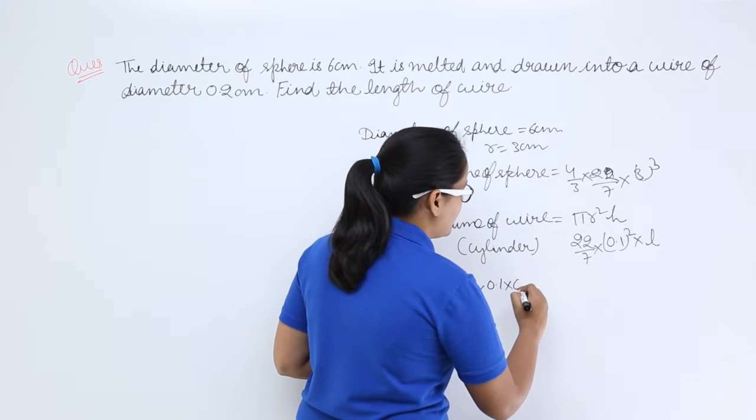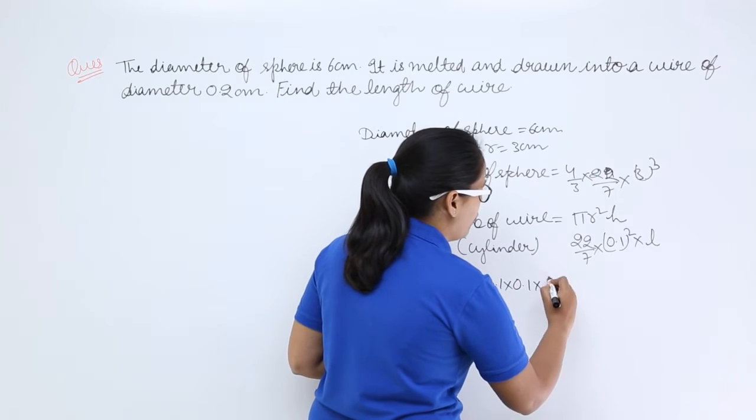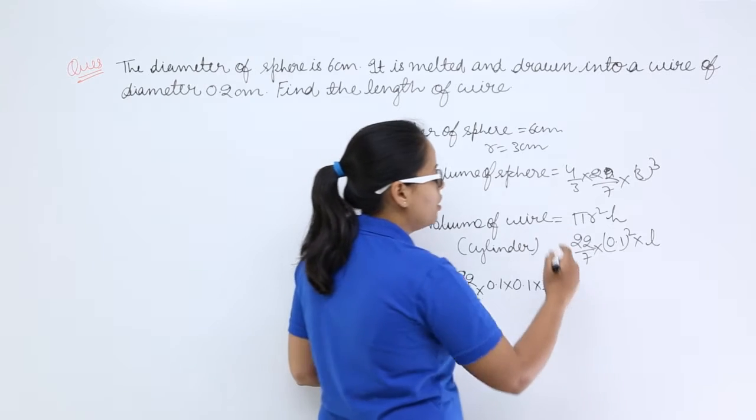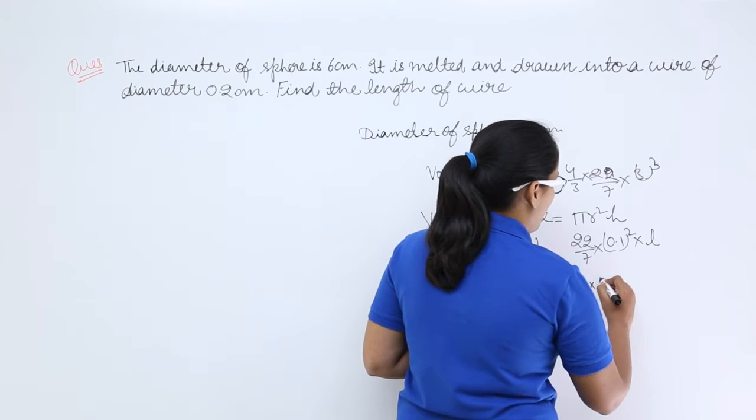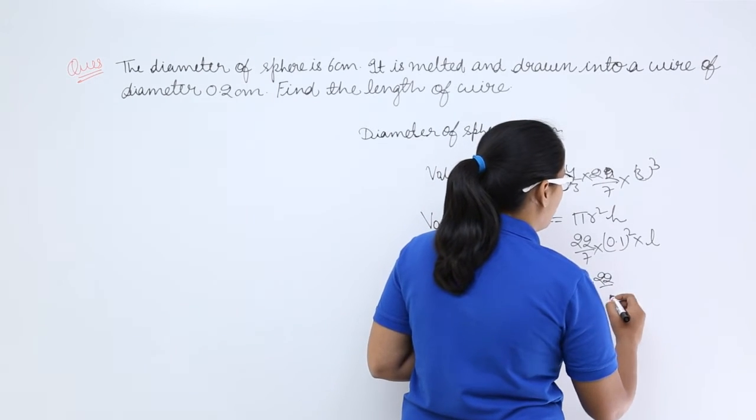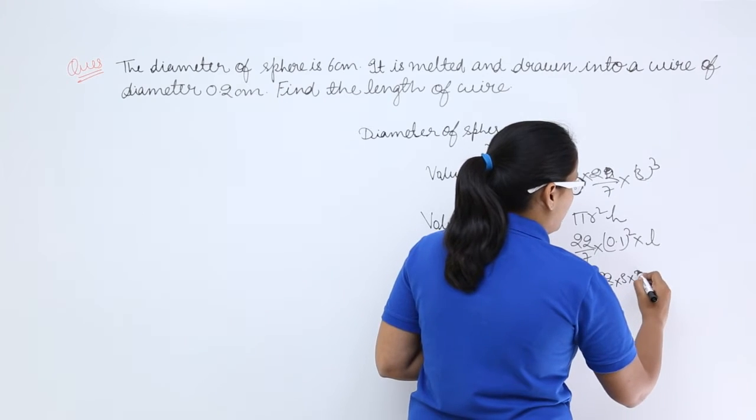You can write this as 22/7 × 0.1 × 0.1 × h, this is the length of the wire. Now when you will equate this with the volume of sphere you will get this.